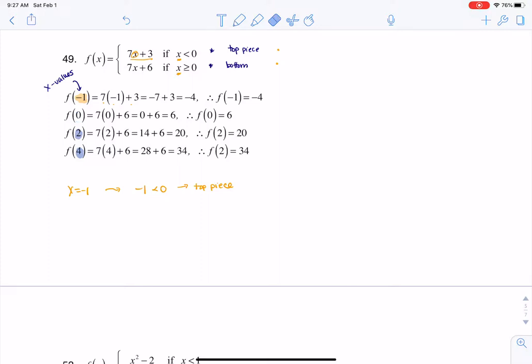So let's try it now with f of 0. Let me change highlighter colors. Let's go to red. So we're going to try 0. Let me change my pen color to red. So if I have x equaling 0, again, same dilemma. Is it top piece or bottom piece? Well, let's take a look. Is 0 less than 0, or is 0 greater than or equal to 0?